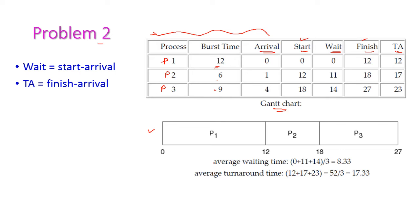What is the formula for waiting time? Waiting time equals start time minus arrival time. And the next one is TA — TA is nothing but turnaround time. Turnaround time is the total number of time taken to complete the process — that is, finishing time minus arrival time.